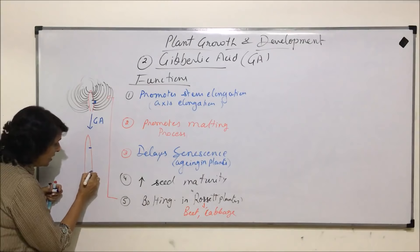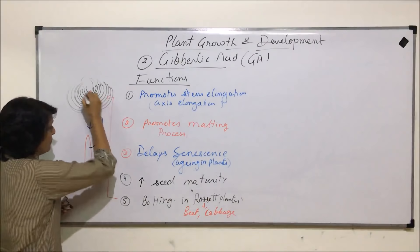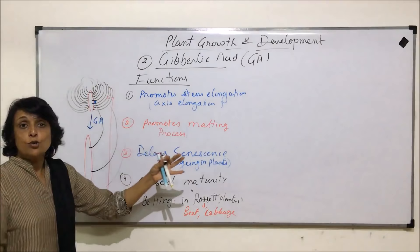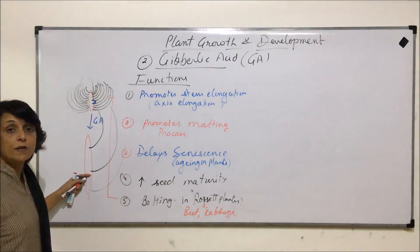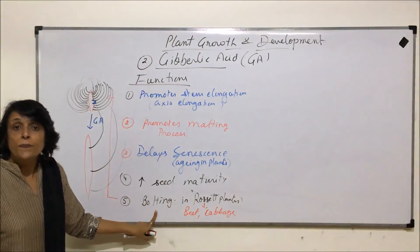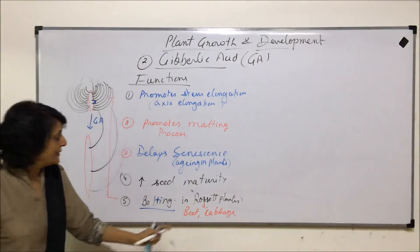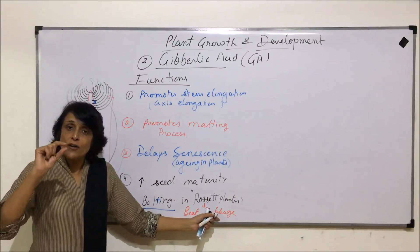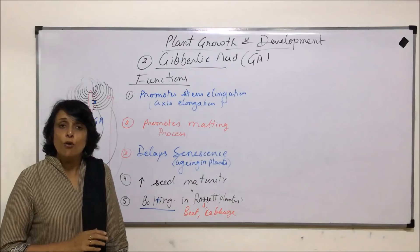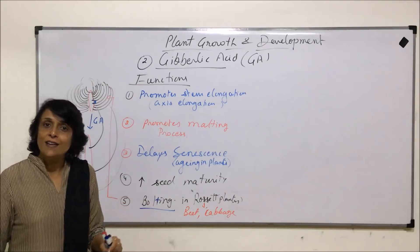After treatment, the axis becomes very long due to inter-nodal elongation. One node is here, the next node is farther away, and leaves arise from each node. So the cabbage becomes very large and the gap between leaves — the internode — becomes very long. Such a change is known as bolting, and it is observed best in rosette plants because they have short internodes. In plants which already have long internodes, the increase would not be very obvious.